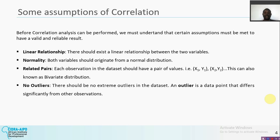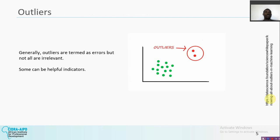The fourth assumption is no outliers: there should be no extreme outliers in the dataset. An outlier is a data point that differs significantly from other observations. When you draw a graph and see that most variables are close to one another but a particular observation is significantly far away from the others, that is an outlier. In the graph shown, you can see some observations are very close to one another, then there are two observations that are very far away — those are outliers.